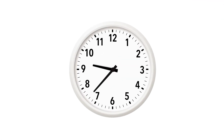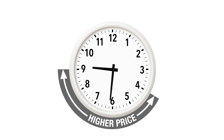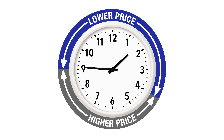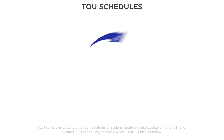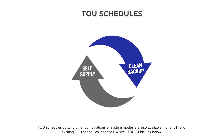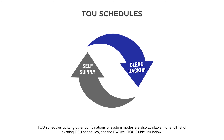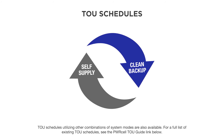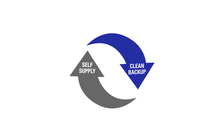PowerCell can be programmed to switch between self supply and clean backup modes on a schedule that maximizes cost savings for system owners subject to time-of-use rate schedules from their utility. Learn more about TOU schedules and how they save even more money by minimizing grid usage during high price periods. Schedules cycle between system modes to achieve best value if the customer is enrolled in a TOU tariff.